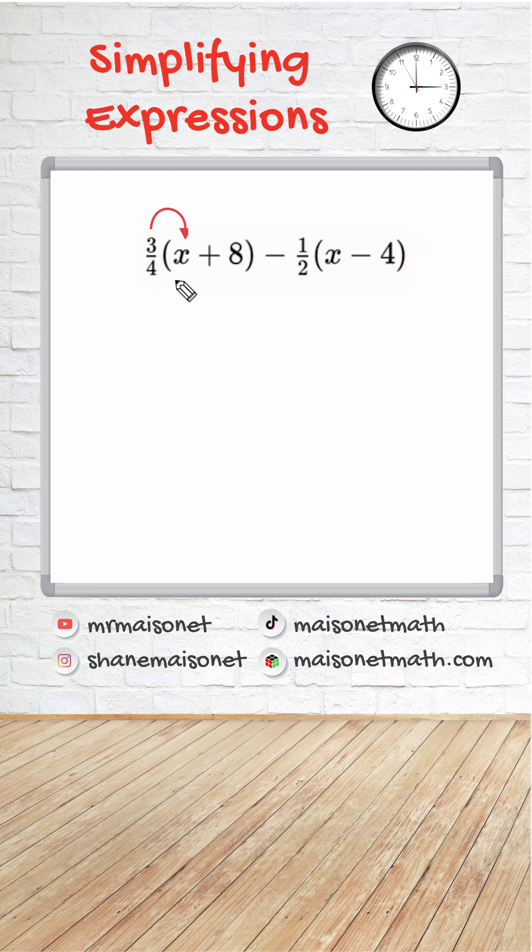So we're going to multiply 3/4 by x, which is 3/4 x, and then we multiply 3/4 by 8, which gives us 6.